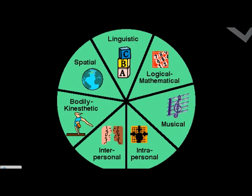Perhaps a more familiar model is Gardner's multiple intelligences. Basically, students have different intelligences and can be strong or weak in different areas. So rather than thinking of intelligence as one scale, we can think of it as multidimensional.